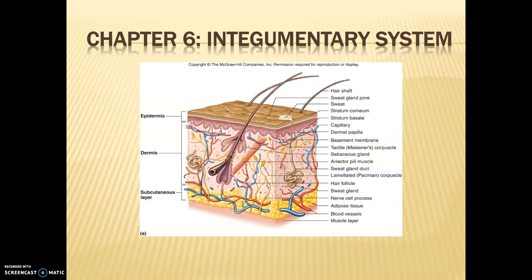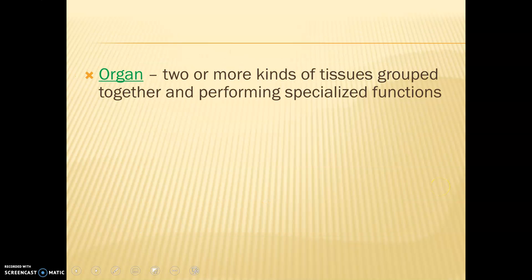Hi everyone, we're going to move right into our next system here. We are going into our first organ system, which is the integumentary system, or something you might be more familiar with — this is our skin. An organ is two or more types of tissues grouped together to perform specialized functions. So our first organ we're going to be talking about is our skin.